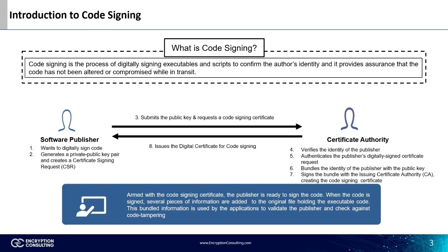First, a software publisher who wants to digitally sign code will generate a public-private key pair and create a CSR, or certificate signing request. They will submit the public key and CSR to a certificate authority, who will verify the identity of the publisher and authenticate the publisher's digitally signed certificate request. Then they will bundle the identity of the publisher with a public key and sign the bundle with their issuing CA certificate, creating a code signing certificate that will be issued to the software publisher for code signing.